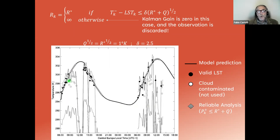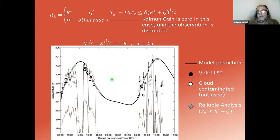You may have reliable analysis — with an estimate of its error that is not too large — even at times where cloud contamination marks the measurement as not good. This uses the prediction capability of the Kalman filter. So this algorithm has two advantages: it filters out cloud-contaminated measurements, but also provides estimates of land surface temperature even in cases of cloud contamination.